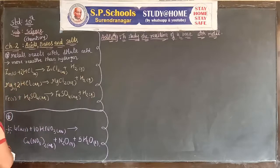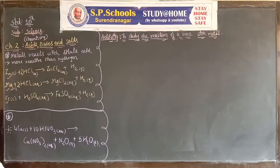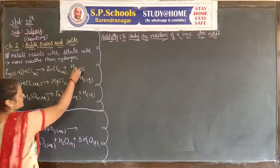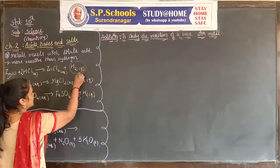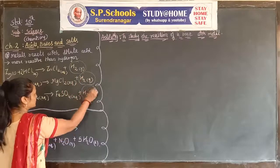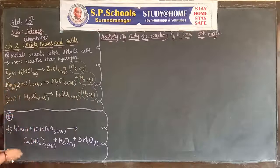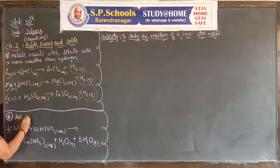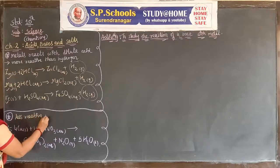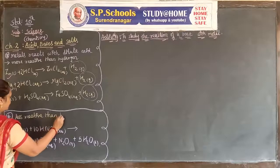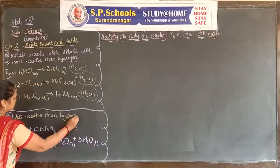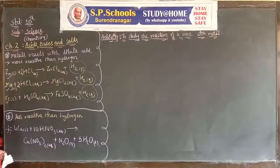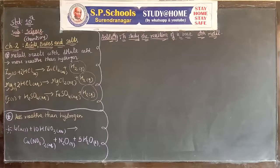These metals — Zn, Mg, and Fe — are more reactive than hydrogen, so they liberate hydrogen gas during their reaction. But some metals are less reactive than hydrogen, so they do not evolve hydrogen gas during their reaction.